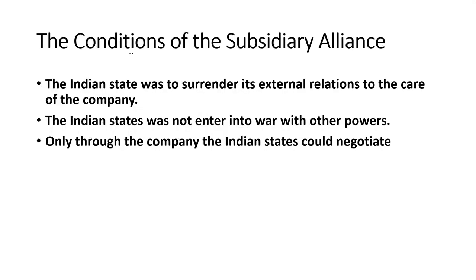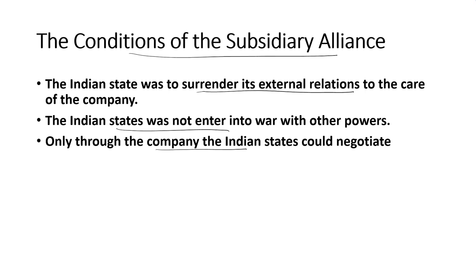What were the conditions of the subsidiary alliance devised and elaborated by Lord Wellesley? First, the Indian state was required to surrender its foreign relations to the care of the English East India Company. It would not engage with any third power independently — all relations with third powers should be through the British. The Indian states were not to enter into war with other powers. The English East India Company emerged as the main arbiter through which the Indian states could negotiate.